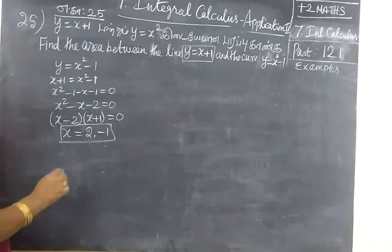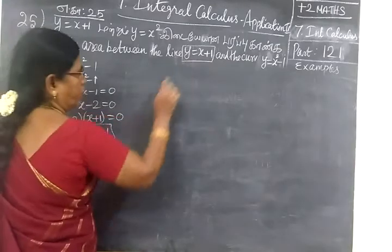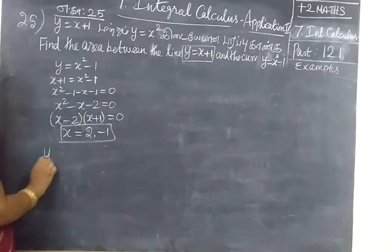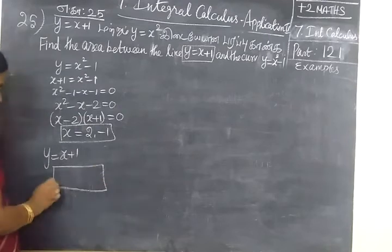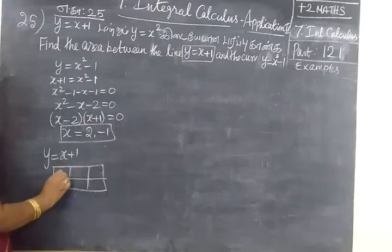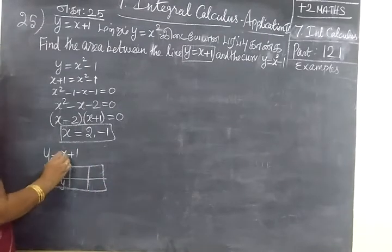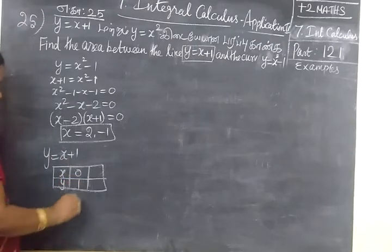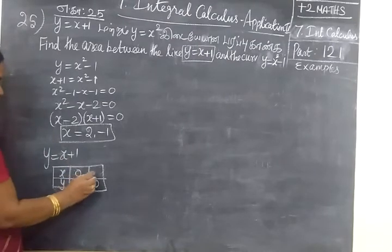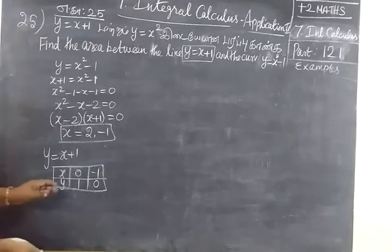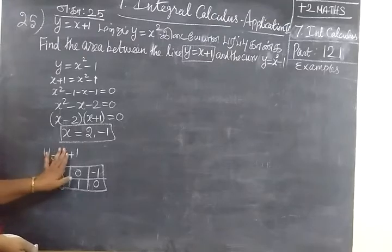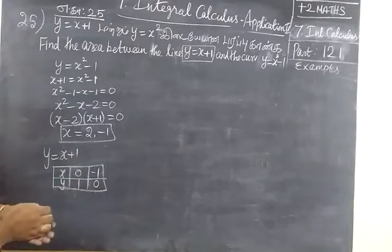Now we can find the y values. We have to draw y equal to x plus 1. For that, when x equal to 0, y value is 1; when y equal to 0, x value is minus 1.